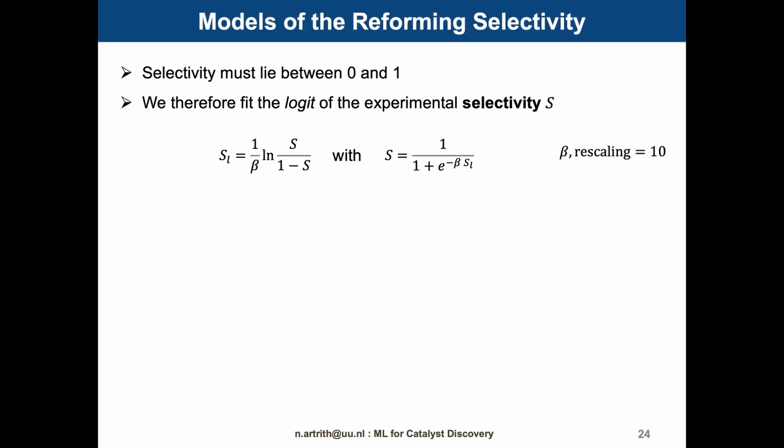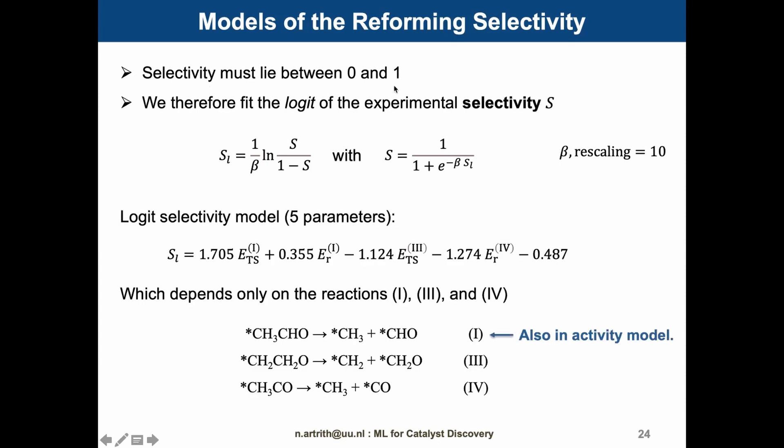For the selectivity prediction, we first rescale the experimental selectivity data with the logistic function. This way, we make sure that the predicted selectivity is between 0 and 1, or 0 to 100%. The logistic selectivity model then depends on four features or five parameters. Three reaction steps enter the model. Note that the first reaction also occurs in the activity model. Interestingly, all three reactions are only CC bond breaking reactions.